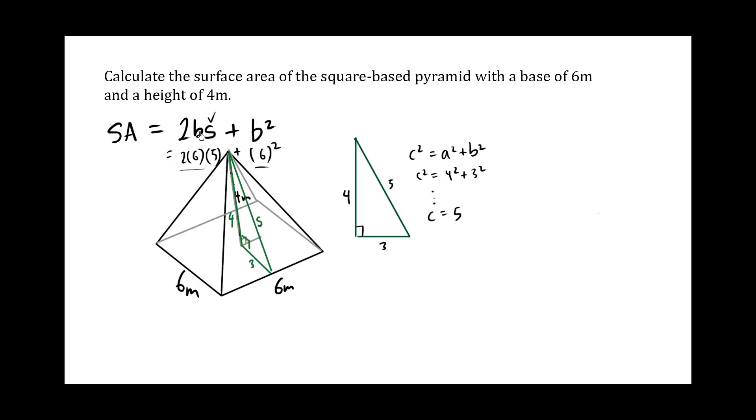Now where does this 2Bs come from? Well, this here is the base. Now the slant. The slant is the height of this. You can think of this as a triangle. Now you know that triangle formula is 1 half base times height.